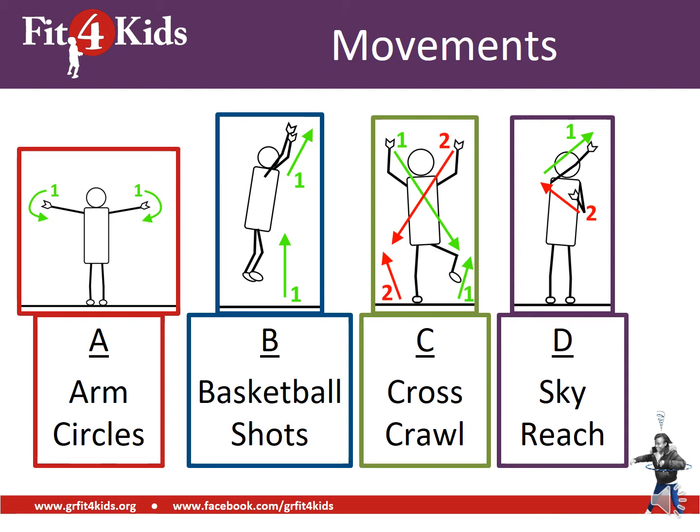We have four different movements for you today. The first movement is arm circles — stretch your arms out like a T and move them in circles forward. If your answer is B, we have basketball shots — jump up and reach like you're shooting a basket. If your answer is C, we'll do cross-cross: raise your hand, cross your body, touch your knee. And finally, if D is your answer, you'll do sky reaches — fists in front of your eyes, then reach up and across with your elbow in front of your nose and back down.